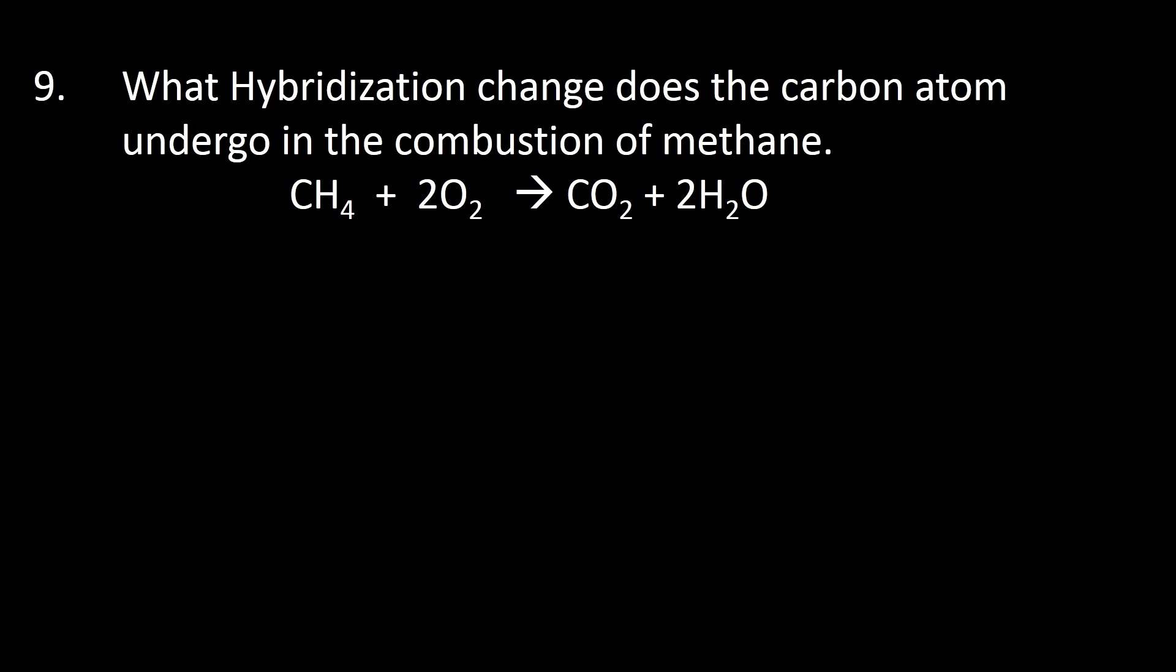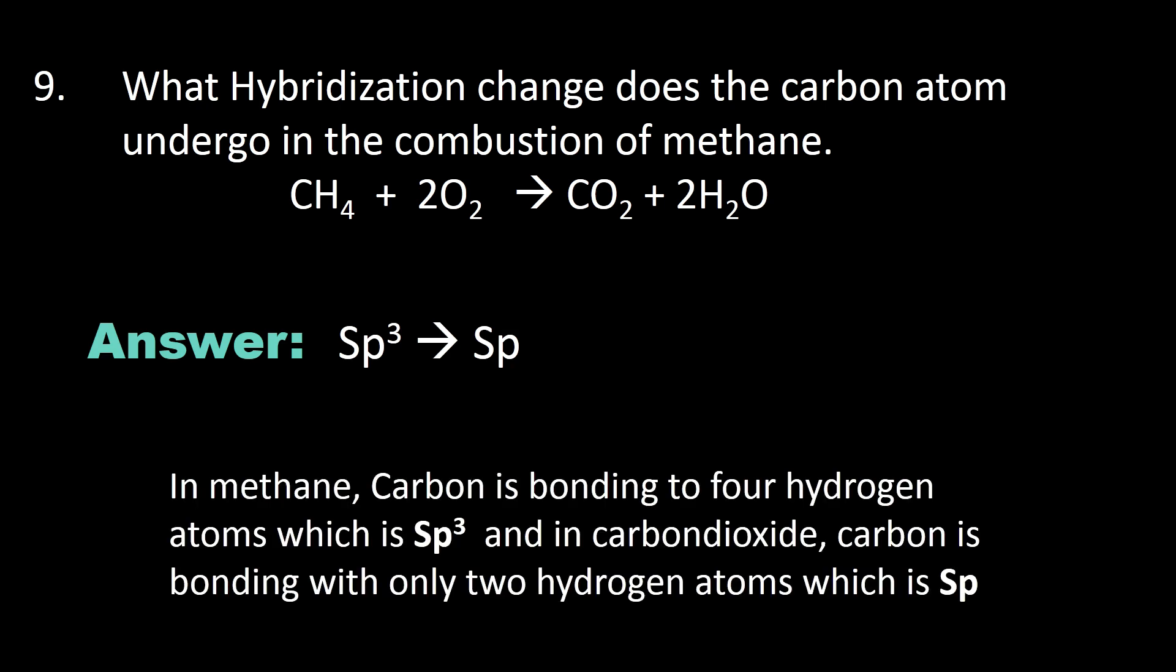Number nine: what hybridization change does the carbon atom undergo in the combustion of methane? The answer is sp³ to sp. The reason is in methane, carbon is bonding to four hydrogen atoms (CH₄), so it will definitely be sp³. In carbon dioxide, carbon is bonding with only two oxygen atoms, which is sp.